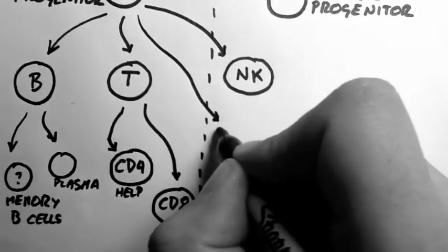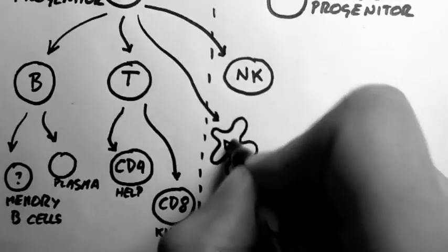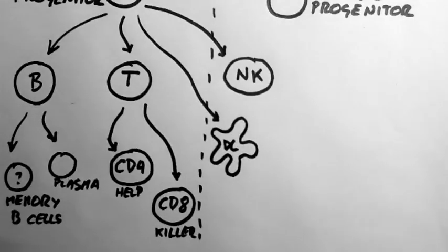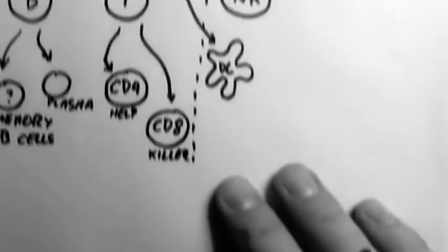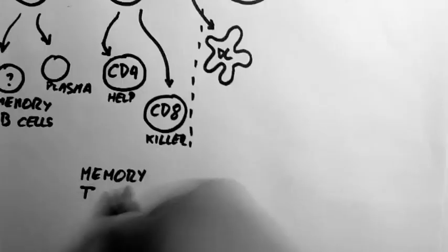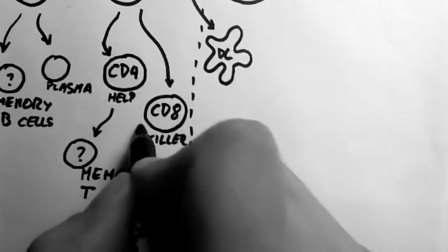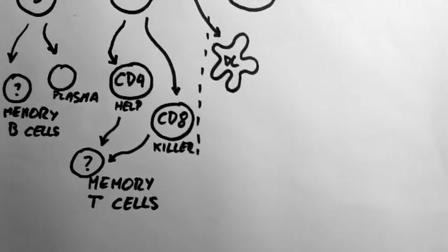Now an element that's not really part of either system is a dendritic cell, and that can be produced from the lymphoid progenitor cell. Then from either type of T cell, you can get memory T cells of that type. So that's the adaptive immunity. Let's have a look at the innate immunity.